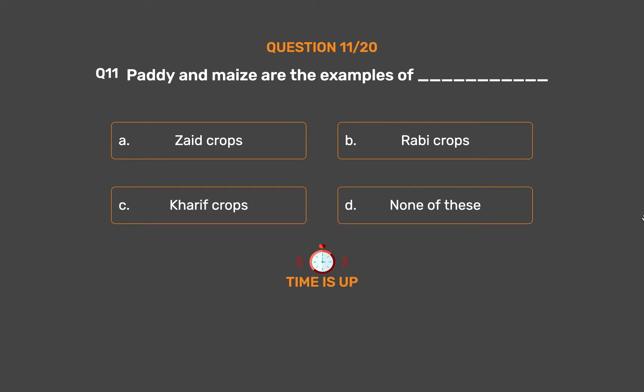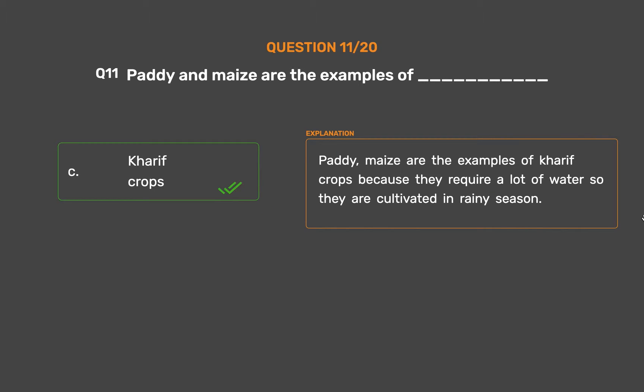The correct answer is Option C: Kharif crops. Paddy and maize are examples of Kharif crops because they require a lot of water, so they are cultivated in the rainy season.